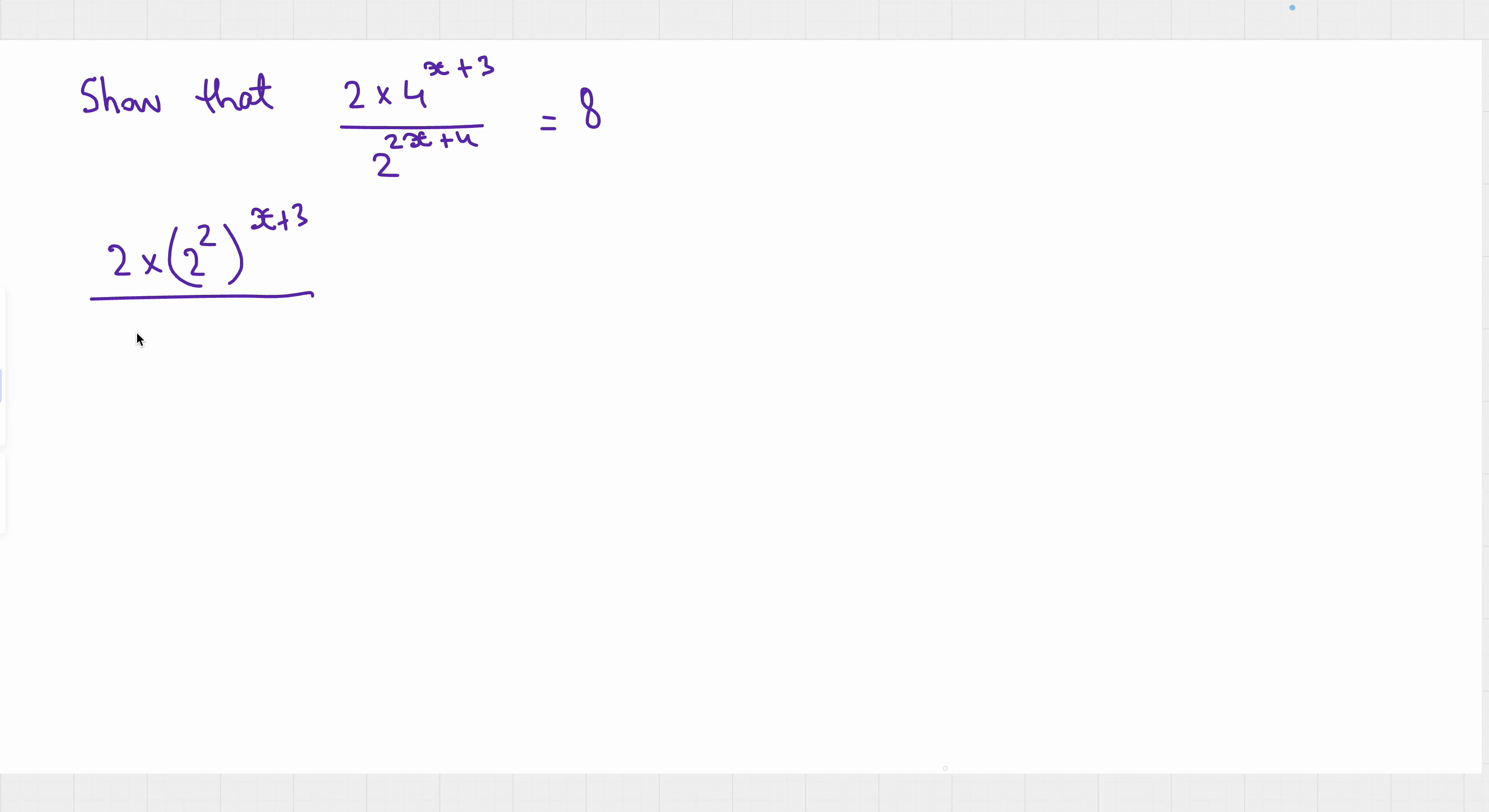divided by 2 to the power 2x plus 4 equals 2 times. When we have a number raised to a power raised to another power, we can say that this number is raised at the power, the multiplication between these two numbers. So if we have 2 to the power 2, everything at the power x plus 3 is basically 2 to the power 2 times this.